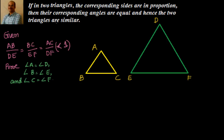Hence the two triangles are similar. Given two triangles ABC and DEF, we are given that AB/DE is equal to BC/EF is equal to AC/DF. Now what we have to prove is that angle A is equal to angle D, angle B is equal to angle E, and angle C is equal to angle F.